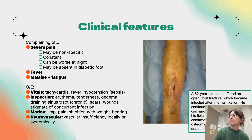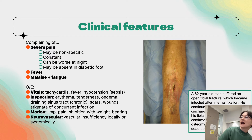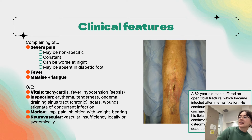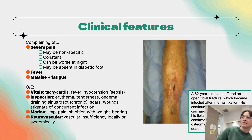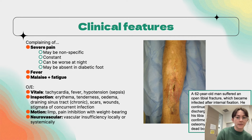Here is an image of a man who suffered an open tibial fracture and had intermittent discharge of pus from the anterior tibia for many years — illustrating how chronic osteomyelitis can present.